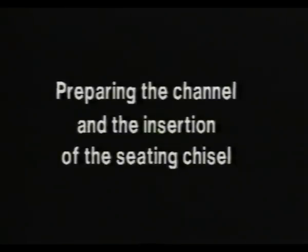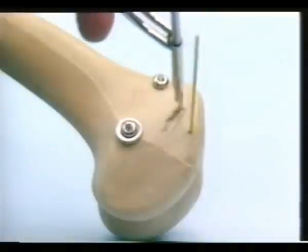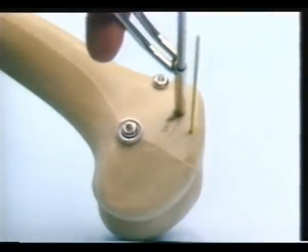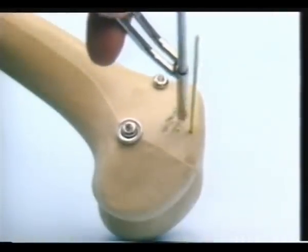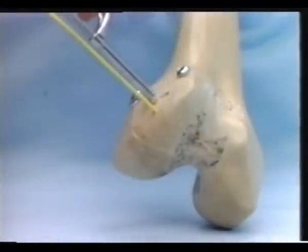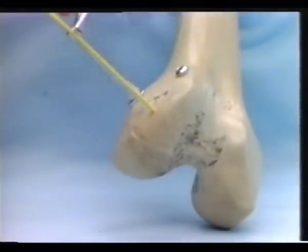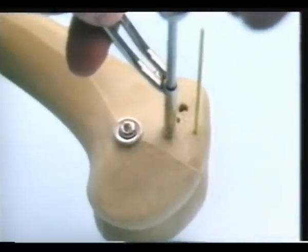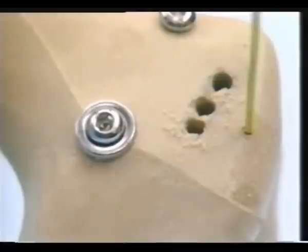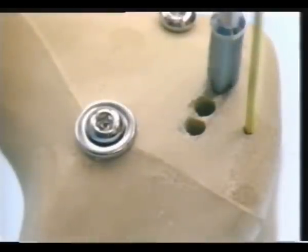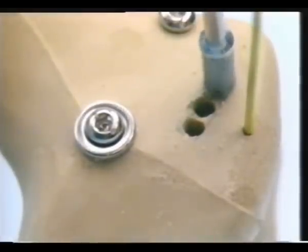Preparing the channel and insertion of the seating chisel. To open the prepared cortical window, three holes with the 4.5 drill bit are made. These are united with the router.